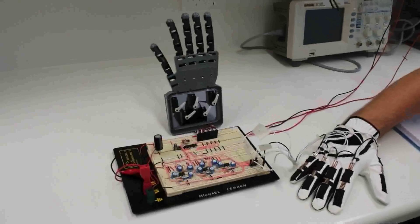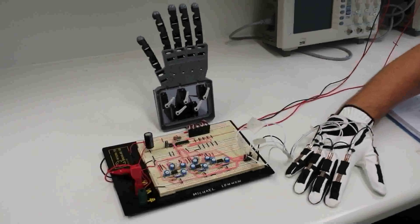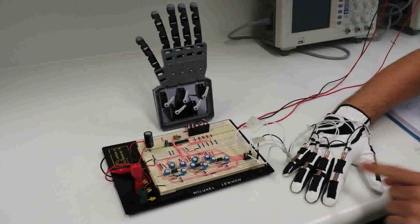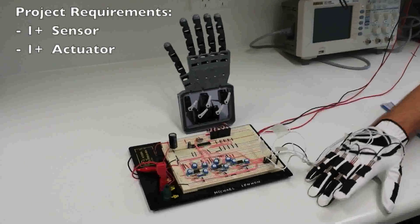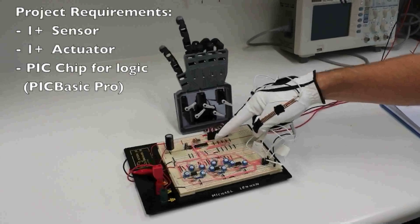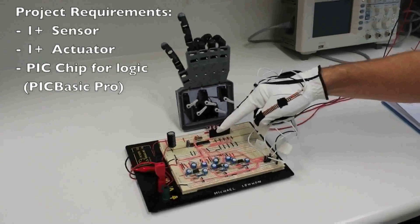This project is a bonus project for our course Practical Electronics 2. The requirements are at least one sensor, at least one actuator, and a PIC chip programmed with PIC Basic Pro to do the logic.